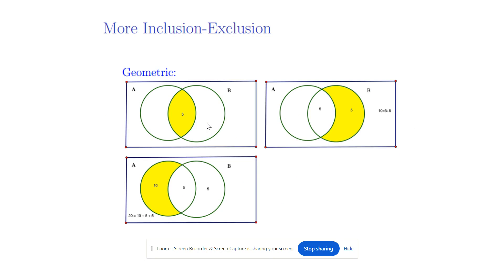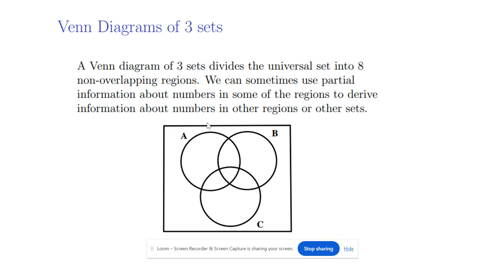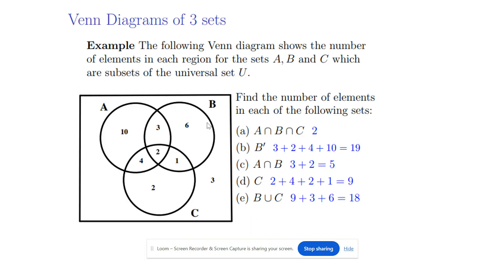The inclusion-exclusion theorem can also be shown by the Venn diagram. Here, two sets A and B are given and the intersection is shown by the shaded yellow color — the number of elements common to A and B is 5. The elements in B only are also 5, and the B complement is 10, shown by the yellow shaded part in the third diagram. So A union B is given by all the elements in A and all the elements in B minus the common elements in A and B.